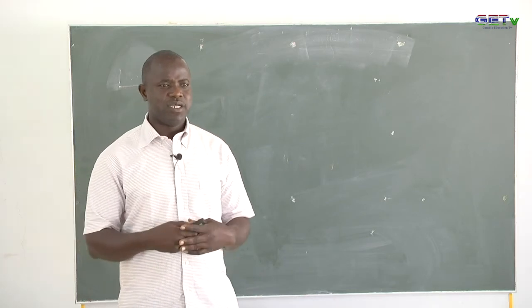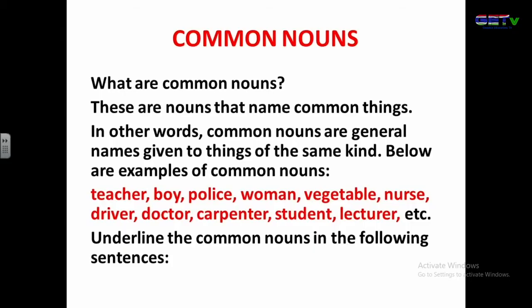Common nouns — what are common nouns and why do we call them common nouns? These are nouns that name common things. In other words, common nouns are general names given to things of the same kind. Examples: teacher, boy, police, woman, vegetable, nurse, driver, doctor, carpenter, student, lecturer, etc. All these are common nouns because these are common names given to things of the same kind.